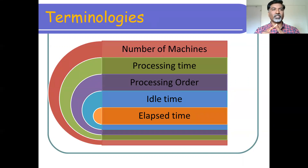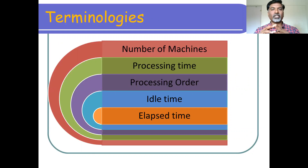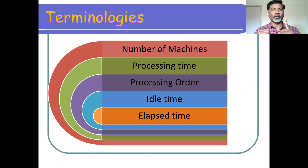A machine or a human resource can be a server. Those processors are referred to as number of machines. The second terminology is processing time, which is nothing but the time required to complete a single job.